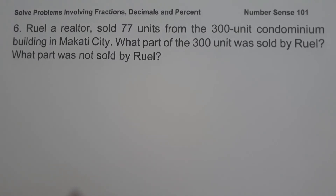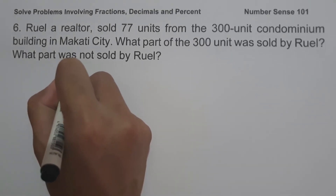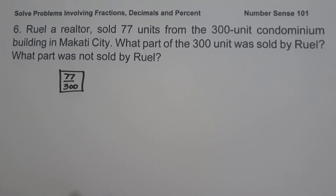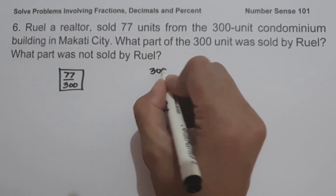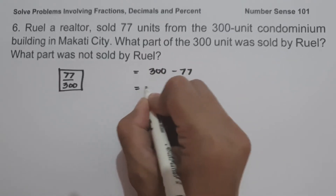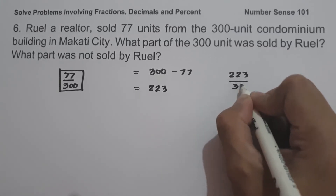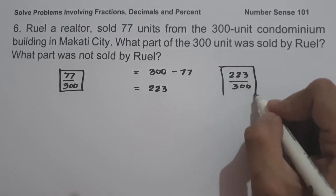On example number 6, Ruel sold 77 units from a 300-unit condominium building in Makati City. What part of the 300 units was sold by Ruel, and what part was not sold? Since Ruel sold 77 units out of 300, the part sold is 77 over 300. To find the part not sold: 300 minus 77 is 223, so 223 over 300 is the part not sold by Ruel.